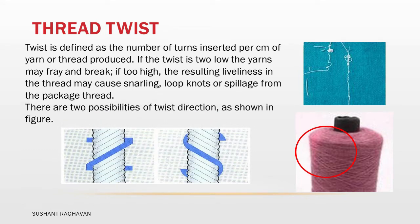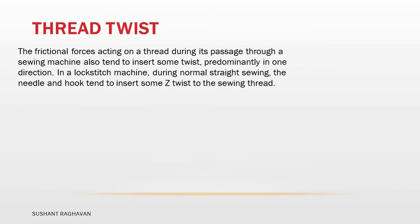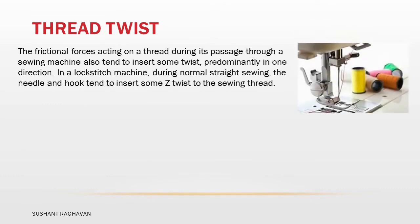There are two possibilities of twist direction, as shown in the figure: Z and S direction. The frictional force acting on a thread during its passage through a sewing machine also tends to insert some twist predominantly in one direction. In a lock stitch machine, during normal straight sewing, the needle and hook tend to insert some Z twist to the sewing thread.